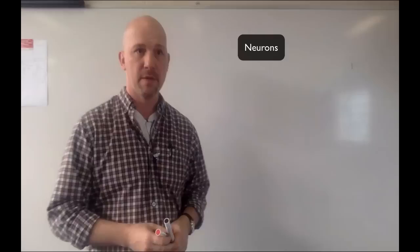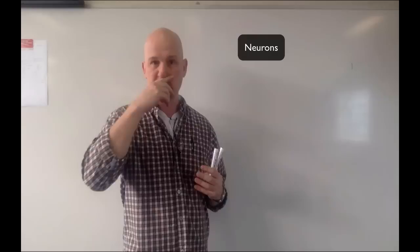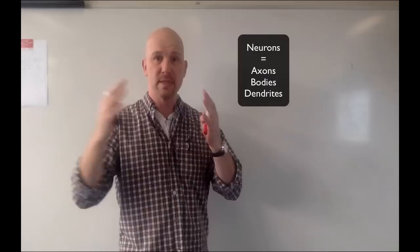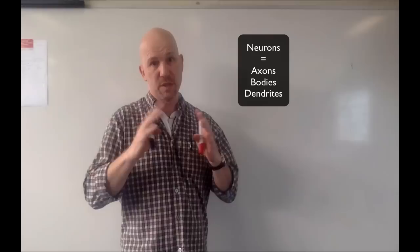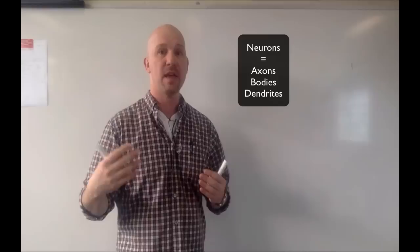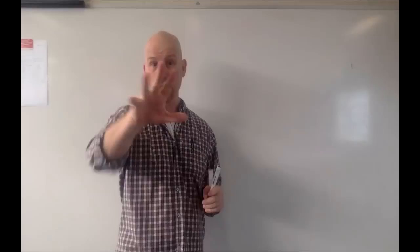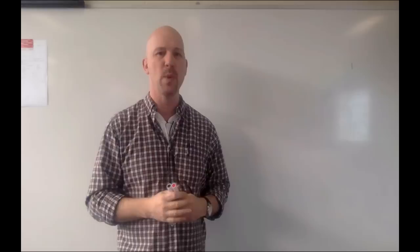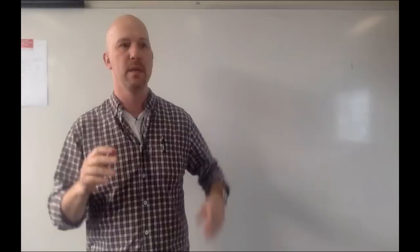So we have neurons inside of our brain. They are cells that are developed to conduct information between each other. Neurons have axons, bodies, and dendrites. The way to remember those things is the body is the central part. The axon is the part that acts on another nerve, and the dendrite is the part that accepts the bit from the axon.